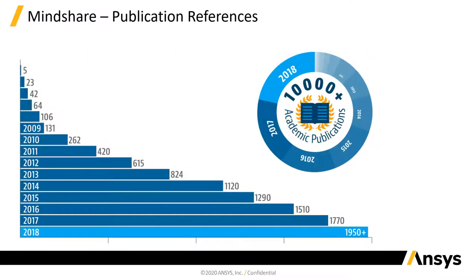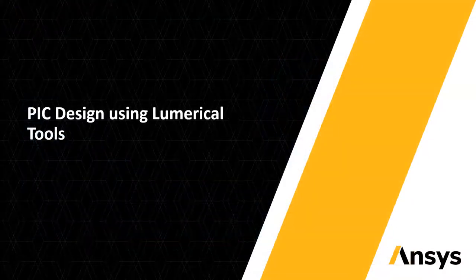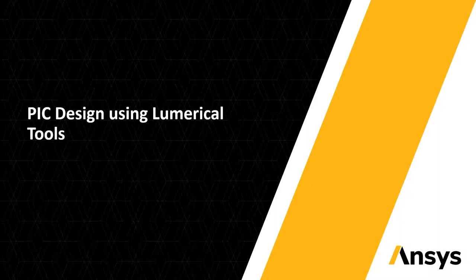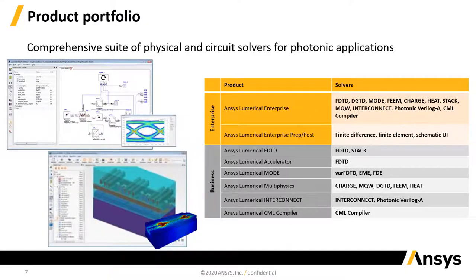This is a graph of publication references we have every year. We started with a very small user base, but as of now we are close to 2,000 to 2,500 publications every year, and that is constantly increasing. Now I will start with the photonic integrated circuit design in Lumerical and go through each module. We have five major products or tools in the portfolio.